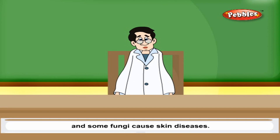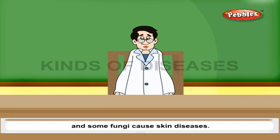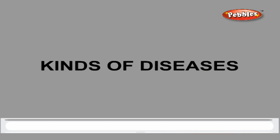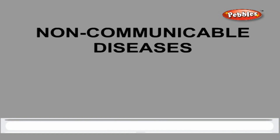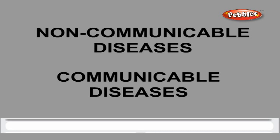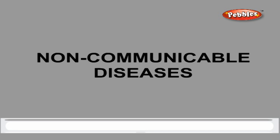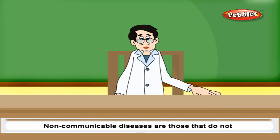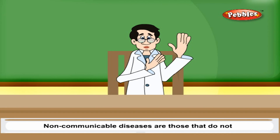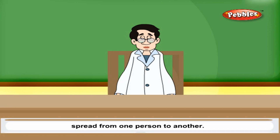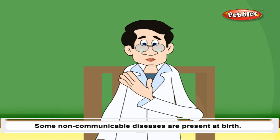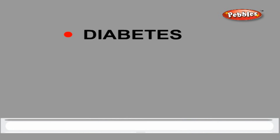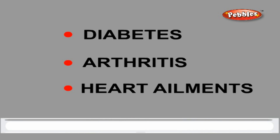Some fungi cause skin diseases. There are two types of diseases: non-communicable diseases and communicable diseases. Non-communicable diseases are those that do not spread from one person to another. Some are present at birth; diabetes, arthritis, and heart ailments are non-communicable diseases.